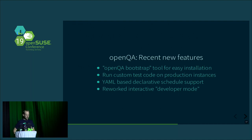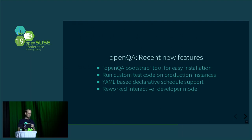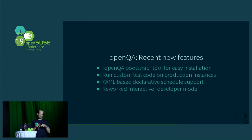There is now YAML-based declarative schedule support. Previously, some scheduling was definable only in the web UI, which is easy and obvious. But for more professional use, it's good to have schedule definitions in a text-based format — that's what was recently done using YAML. There is also a reworked interactive developer mode: way more stable than the older one and really fun to work with. You can interact with the VM while a test is running, which impacts the test result — so that individual job is excluded from test results — but you can interact with the machine for debugging purposes.